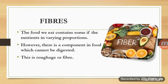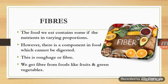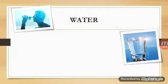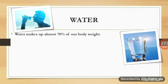The food we eat contains nutrients in varying proportions. However, there is a component called roughage or fiber which cannot be digested. We get fiber from fruits and green vegetables. Even though it cannot be digested, fiber helps in the excretion process — the removal of waste from the body — and is also a necessary part of our diet.